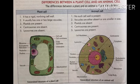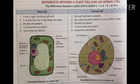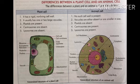Everyone write this difference from page 132 in your book — the difference between plant and animal cells. Plant cell has a rigid, non-living cell wall; animal cell has no such wall. Plant cell usually has one or two large vacuoles; in animal cells, vacuoles are either absent or smaller. Plastids are present in plant cells and absent in animal cells. Centrosomes are absent in plant cells and present in animal cells. Lysosomes are absent in plant cells and present in animal cells.